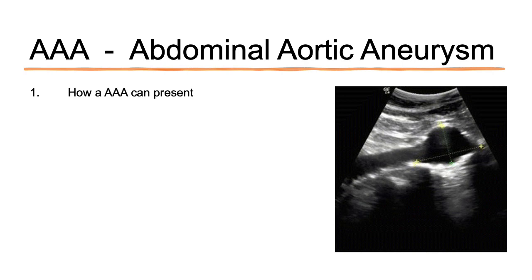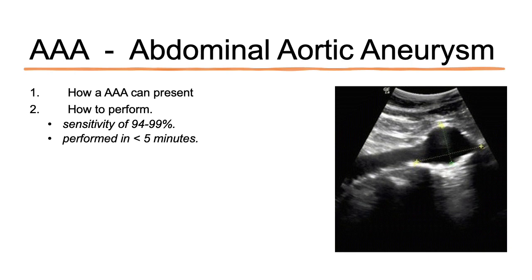Moving on to assessment of the abdominal aorta for suspected aneurysm. We will briefly touch on how a triple-A patient can present, how to perform the procedure — noting that the triple-A scan by point of care ultrasound is as sensitive as 99% and can be performed within five minutes — and we will also discuss certain pitfalls to remember when scanning.